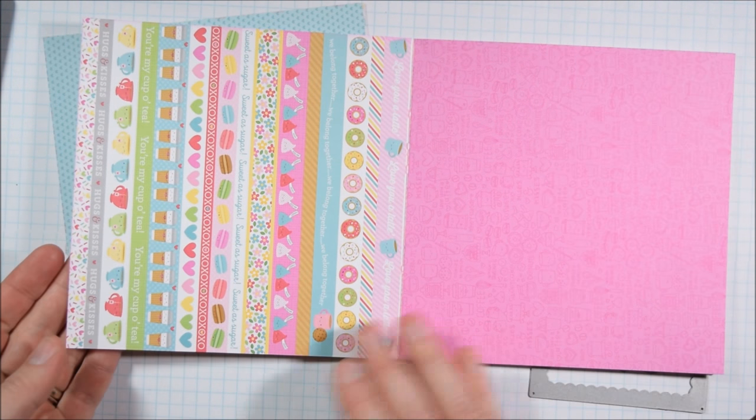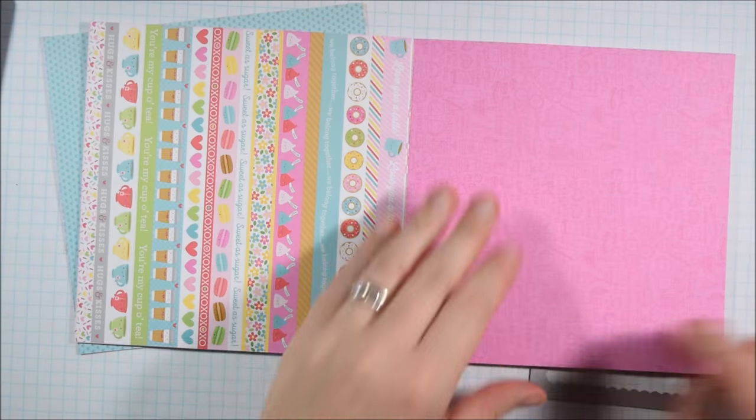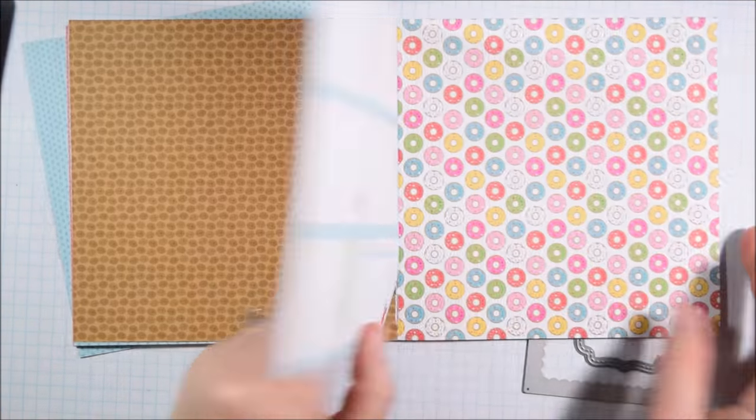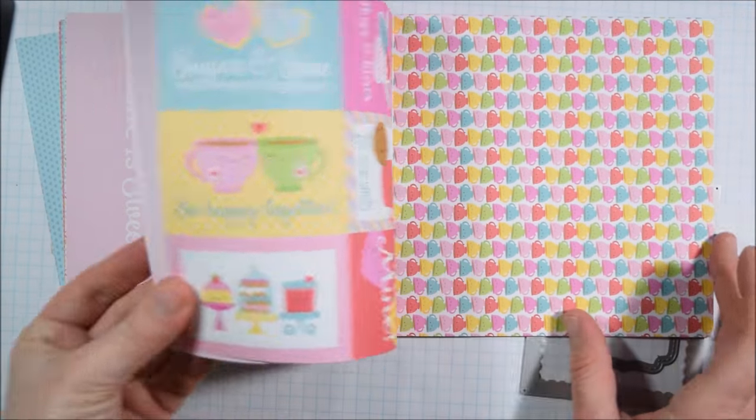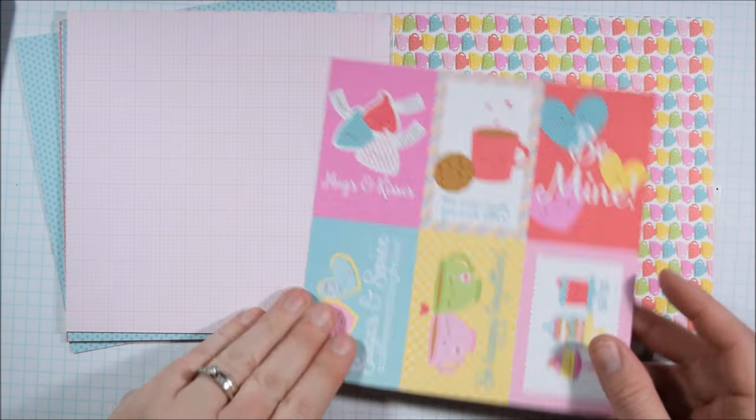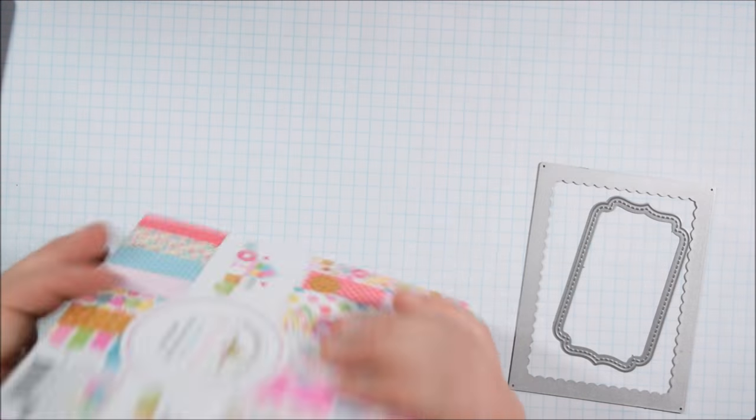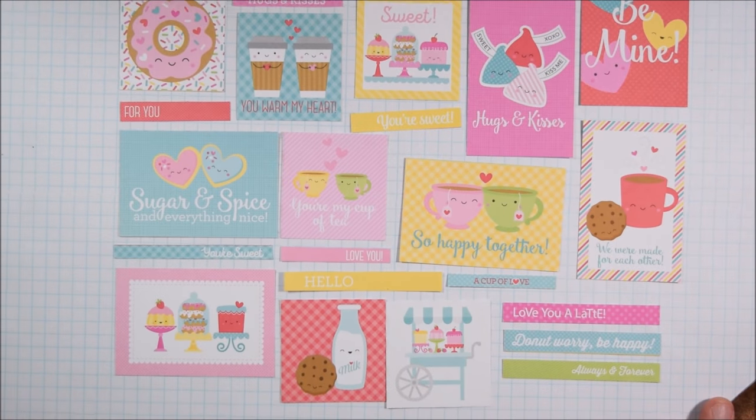So I'm going to pick just a few papers from the 6x6 pad. I'm not going to use the whole pad, but I am going to make 10 cards. There were a couple of pieces of pattern paper that I wanted to reserve and not use yet, like the little iced coffee cups, because I want to do some different stuff with those.